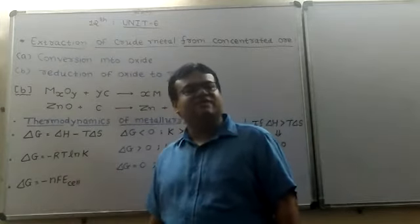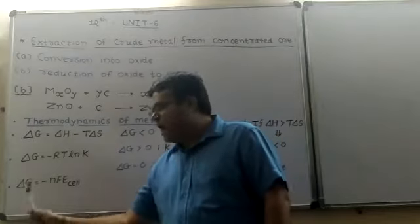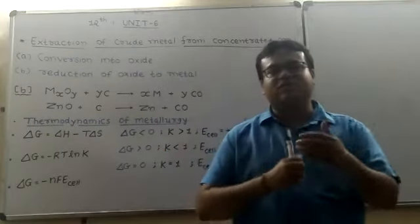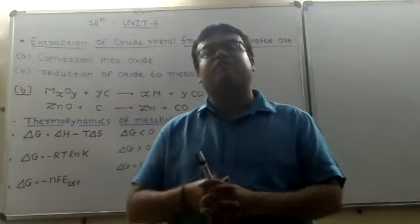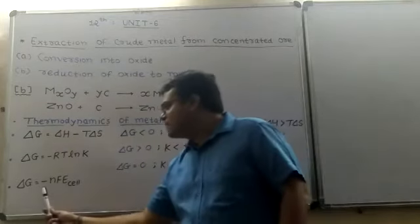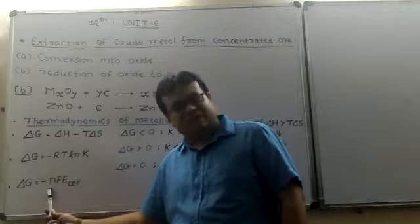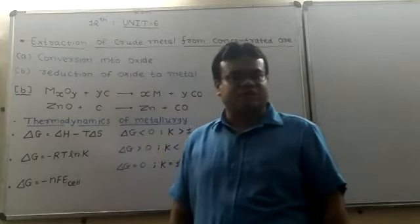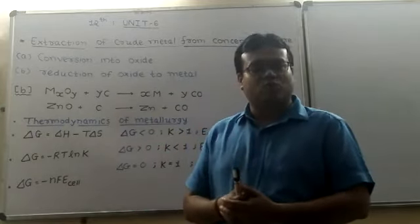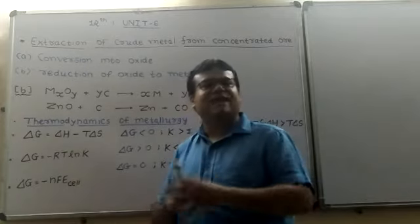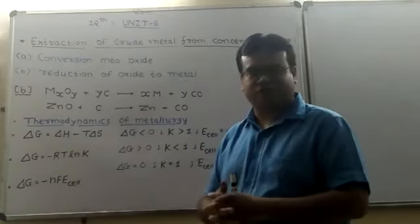One more expression is ΔG = -RTlnK, where K is the equilibrium constant. If the reaction involves change of electrons, it is ΔG = -nFE_cell, where n is the number of electrons transferred, F is Faraday constant (96500 coulomb per mole), and E_cell is the cell potential.